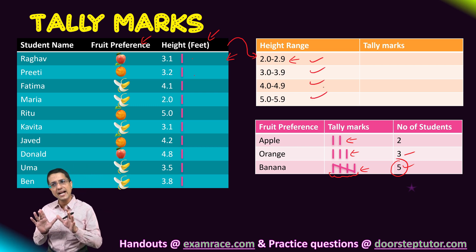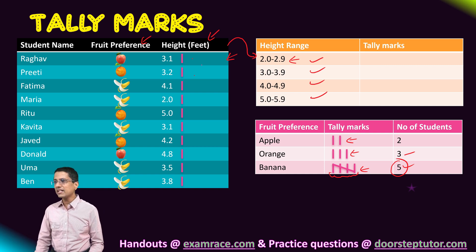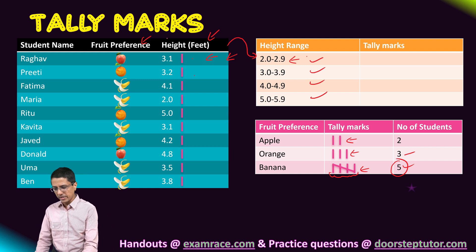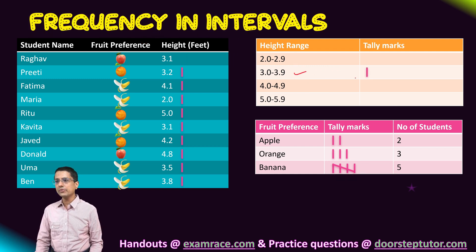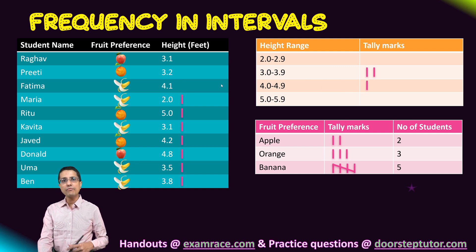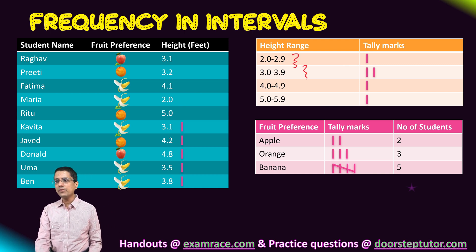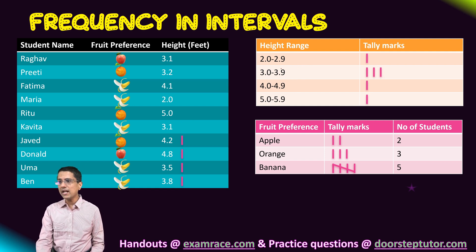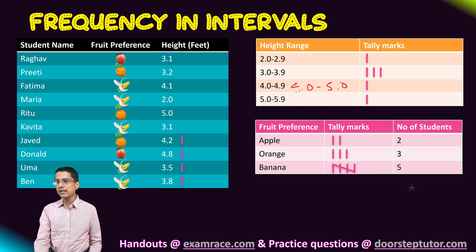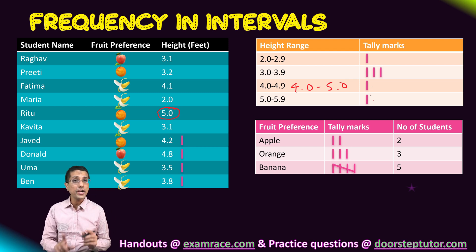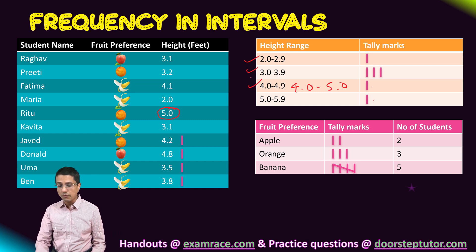The process of classification is similar to what we did for the categorical variable. We start from the first row and increment the count of the corresponding height range. For example, the first row has 3.1, so we increment the count of the range 3.0 to 3.9. One important thing: when creating ranges, make sure they do not overlap. If 4.0 appeared in two ranges, there would be confusion about where to place it. So class intervals must be disjoint.